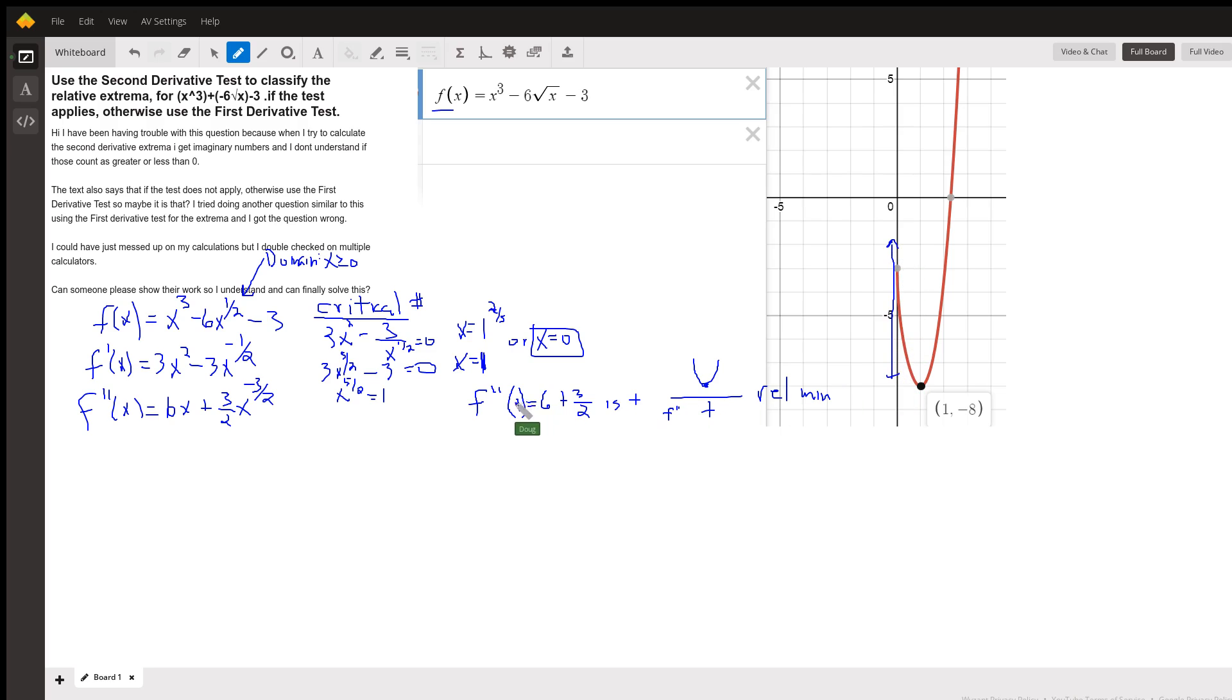Okay, so we want to put this critical number into the second derivative and determine whether the result gives us a positive number or a negative number. If it gives us 0, we do have to resort to the first derivative test,